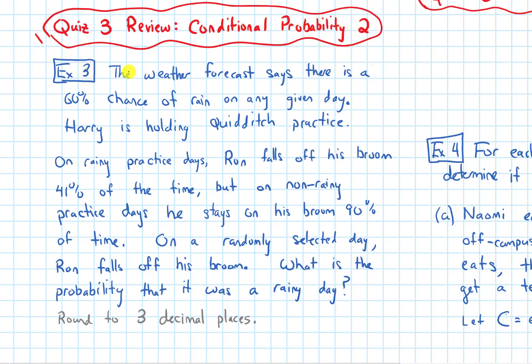The example says: the weather forecast says there is a 60% chance of rain on any given day. Harry is holding Quidditch practice. On rainy practice days, Ron falls off his broom 41% of the time, but on non-rainy practice days, he stays on his broom 90% of the time.